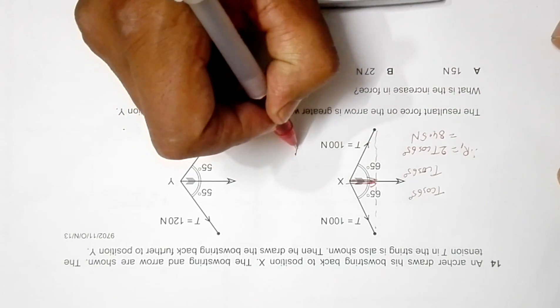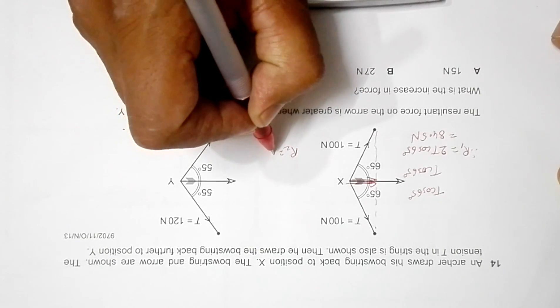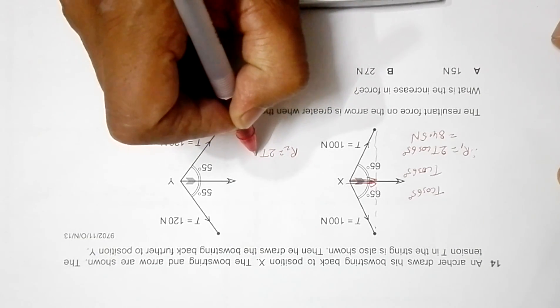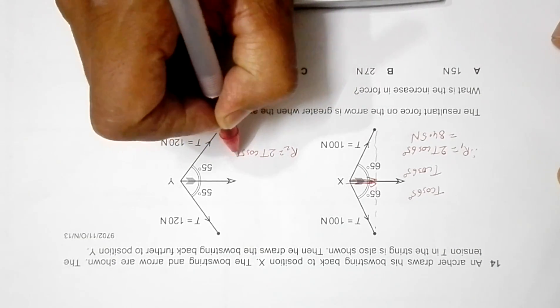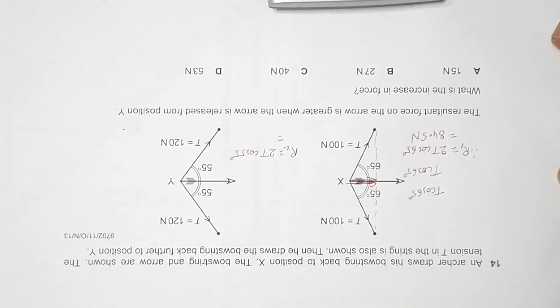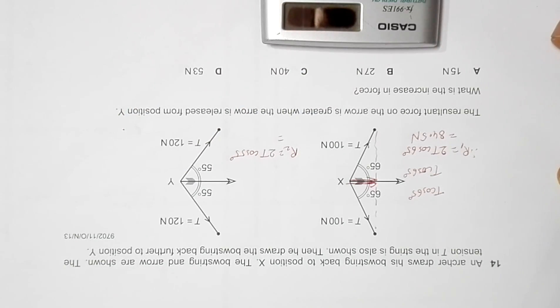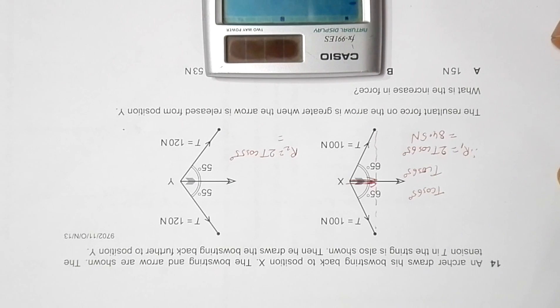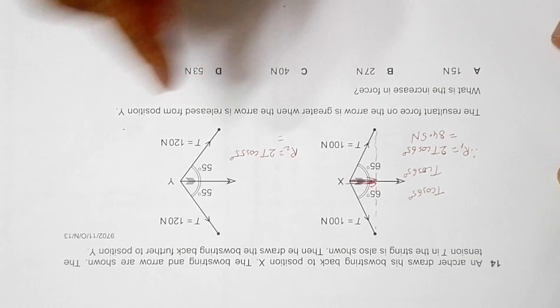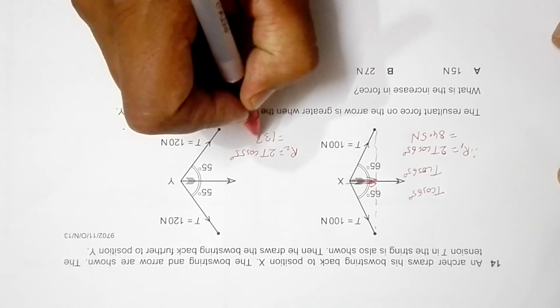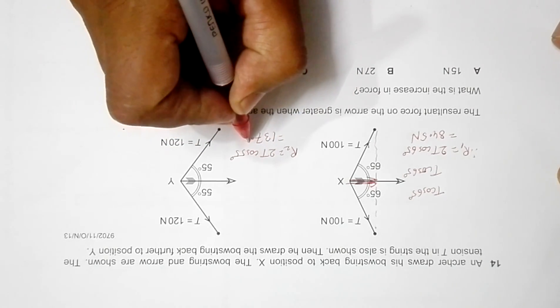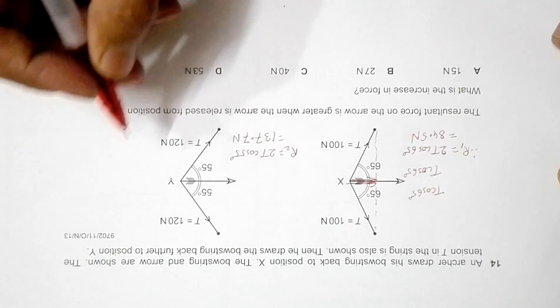In the same way, the resultant force in this case will be equal to 2T cos of 55 degrees. This time the value of tension is equal to 120, so it is 2 into 120 into cos of 55. So its value will be equal to 137.7 Newton.